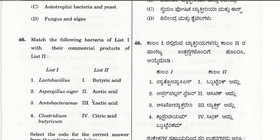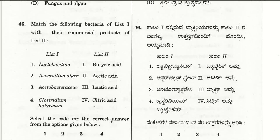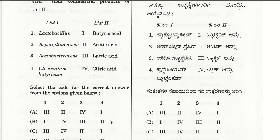The forty-sixth question: match the bacteria with their commercial products. Lactobacillus produces lactic acid, Acetobacter produces acetic acid, Clostridium butyricum produces butyric acid, and Aspergillus niger produces citric acid. The correct choice is C: lactobacillus → lactic acid, Aspergillus niger → citric acid, Acetobacter → acetic acid, Clostridium butyricum → butyric acid.